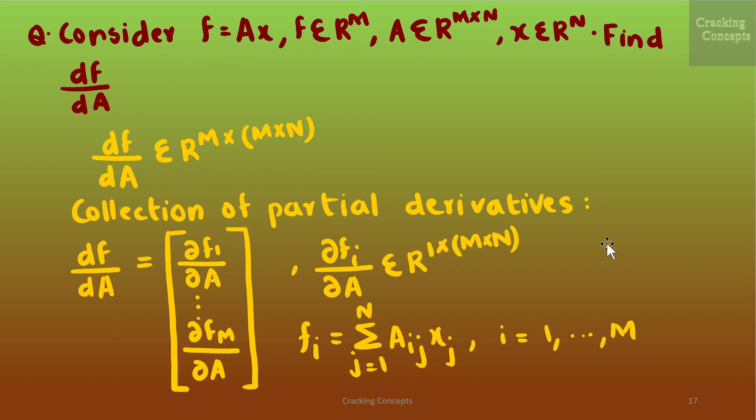Now we will see an example of calculating the gradient of vectors with respect to matrices. We are given f = Ax, where f belongs to ℝᵐ, A belongs to ℝᵐˣⁿ, and x belongs to ℝⁿ. We seek the gradient dF/dA. We start by determining the dimension of this gradient: dF/dA belongs to ℝᵐˣᵐˣⁿ.